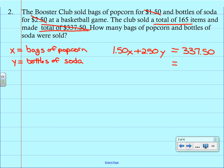The second equation is sometimes the trickier one. We sold a total of 165 items. Now those items were just bags of popcorn and bottles of soda. So the equation is simply X plus Y.